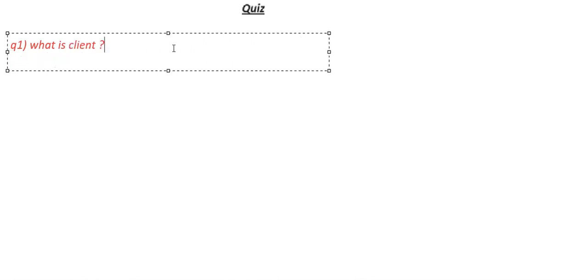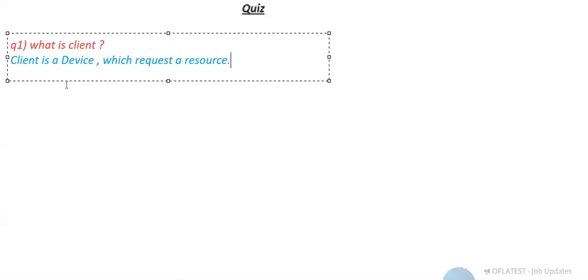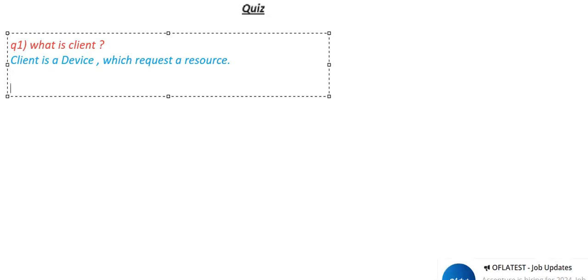Question 1: What is a client? Pause the video and try to answer this question. The answer is: a client is nothing but a device which requests a resource. So a client is a device which requests a resource.